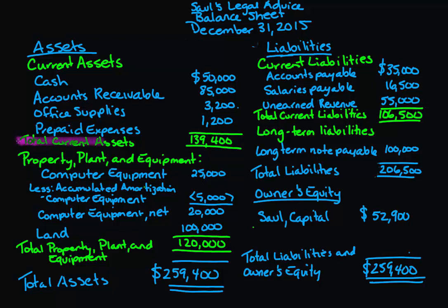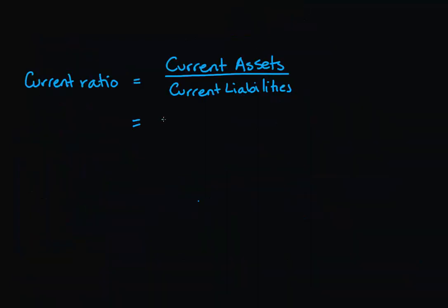We want to make it really easy for investors to look at our balance sheet and compute some key ratios from it. So we're going to be using our current assets and our current liabilities: $139,400 over $106,500.